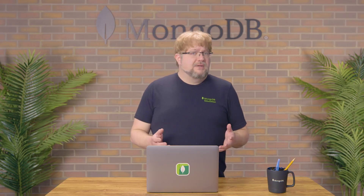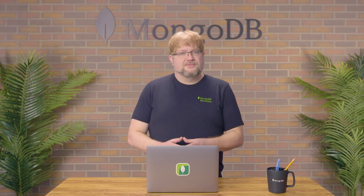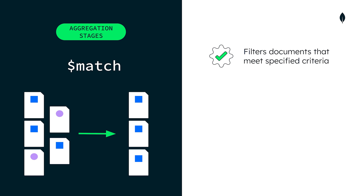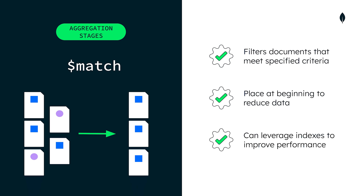MongoDB offers many different aggregation stages. Let's take a quick look at some of the most common stages to give you a sense of what's possible. The match stage filters documents in the pipeline to pass only those that meet specified criteria to the next stage. Placing it at the beginning of your pipeline can optimize performance by reducing the amount of data passed to subsequent stages, and it can also leverage existing indexes to improve performance.